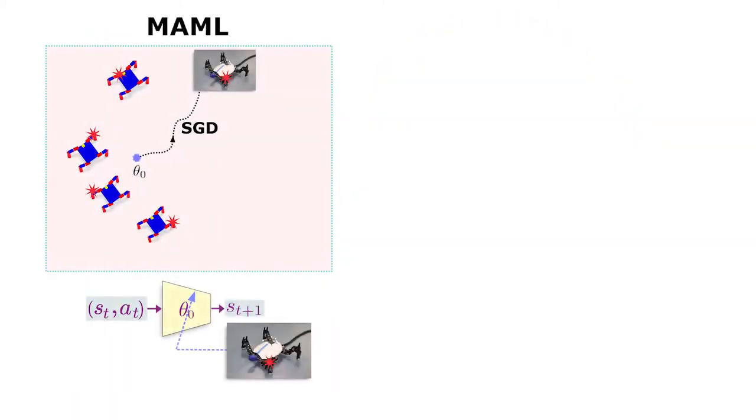In this work, we show that when the prior situations in the simulation have diverse dynamics, using a single starting point to train the dynamical model still requires a large number of samples to learn a useful dynamical model for the real robot.